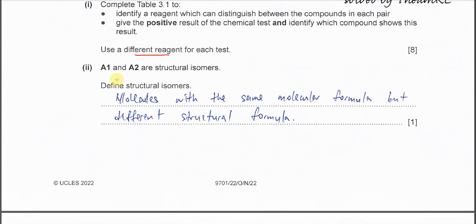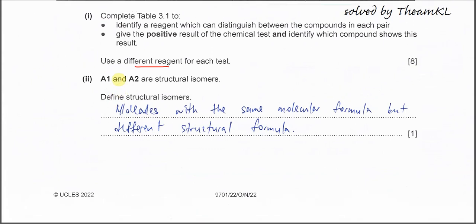Part 2. A1 and A2, they are structural isomers. Define structural isomers. So again, you must mention which one is the same, which one is different. It's the molecules with the same molecular formula, but different structural formula.